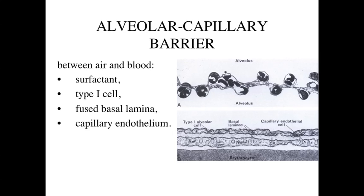The important concept is to minimize the alveolar-capillary barrier — minimizing the distance between the air space and the capillary space. The epithelial lining is coated with surfactant, the type 1 alveolar cell is a very flat cell, there is a fused basal lamina, and then the capillary endothelial cell. This minimizes the distance so that very rapid diffusion can occur — oxygen diffusing from the air into the bloodstream, and carbon dioxide diffusing from the bloodstream out into the air to be expelled from the body.